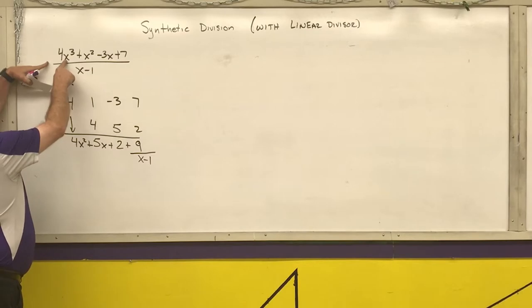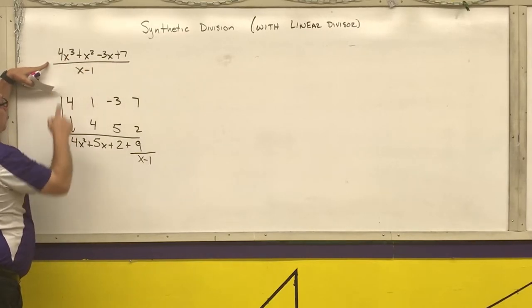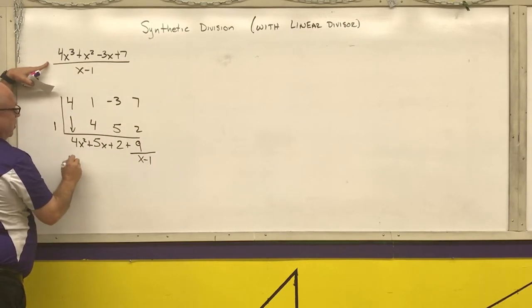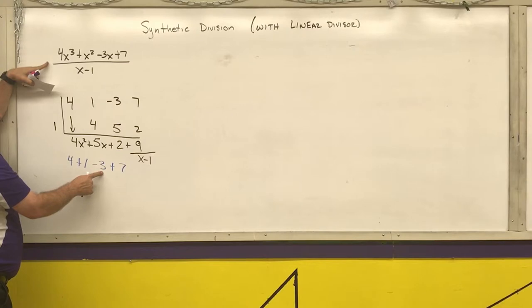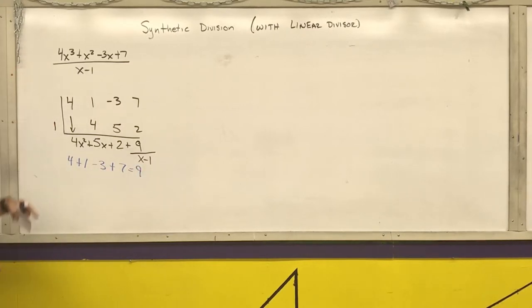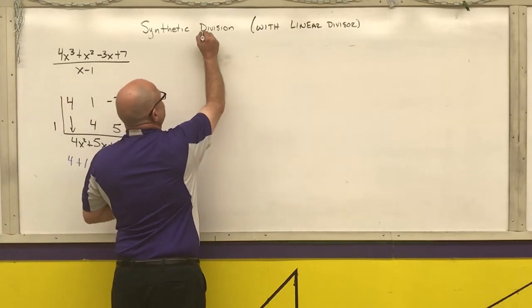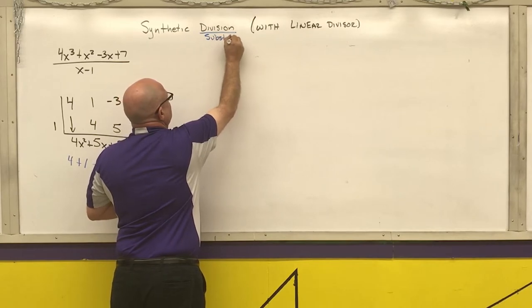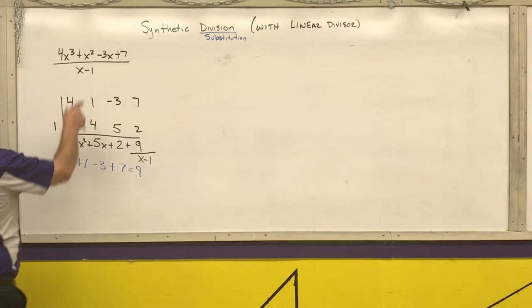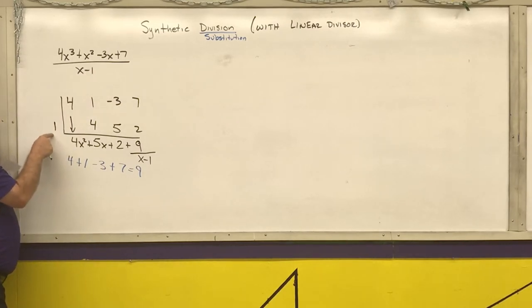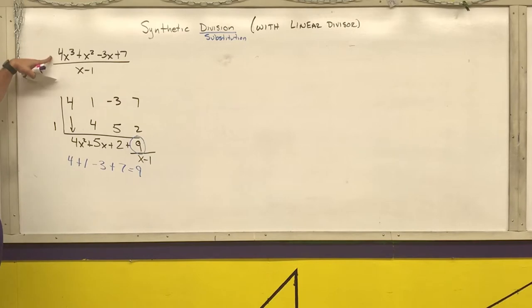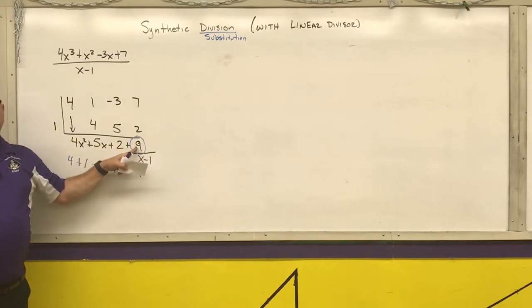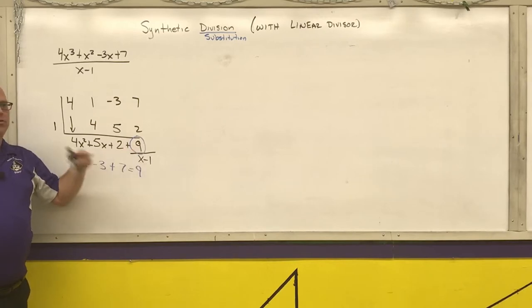Now we're going to put this 1 back into the original equation and see that we get the 9. If I put a 1 into this function, x cubed gives 1, x squared gives 1, x gives 1. So 4 plus 1 minus 3 plus 7: 4 plus 1 is 5, minus 3 is 2, 2 plus 7 is 9. Another name for synthetic division is synthetic substitution, because if I put a 1 in there synthetically, that is the answer — meaning on the graph, at x equals 1, my y-coordinate is 9.